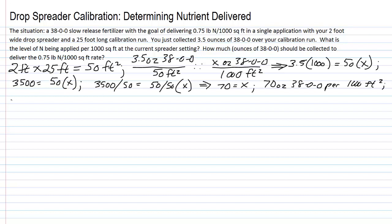That's an answer in itself but typically we'll convert ounces to pounds and get into units that we're comfortable with. Remember that there are 16 ounces per pound when we're talking dry weight. So what we're going to do is take 70 ounces of the 38-0-0 that we are collecting divided by 16 ounces that are in a pound, and we get 4.4 pounds of 38-0-0 that are being delivered per thousand square feet.